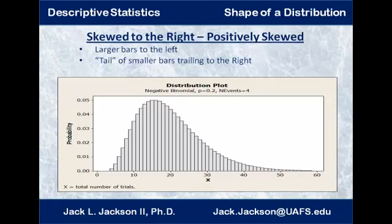This data set here is skewed to the right, or positively skewed. Notice that the larger bars are actually on the left side, with a long tail out to the right — trailing smaller bars going out to the right. Think of which way the tail is going, and that's the direction we say it's skewed. So a long tail to the right means it's skewed to the right, or positively skewed.